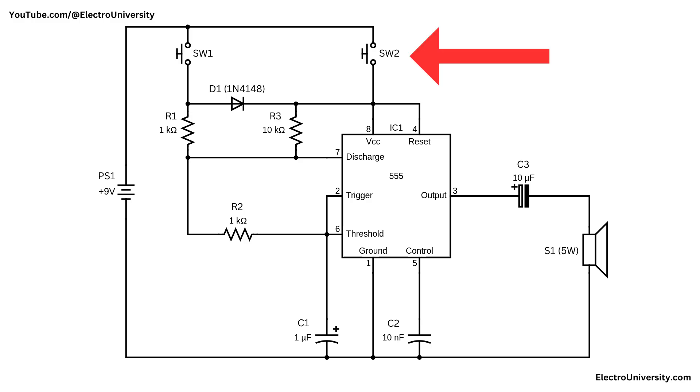When switch two is pressed, the current bypasses D1 and flows through R3 directly, resulting in a different timing behavior and tone.